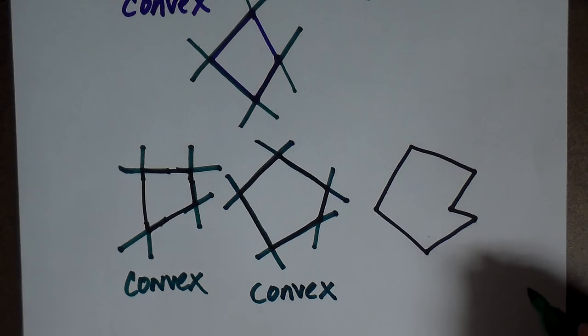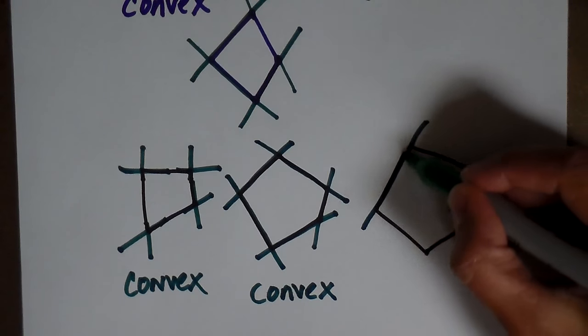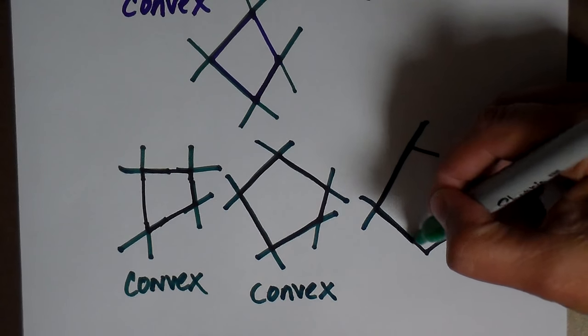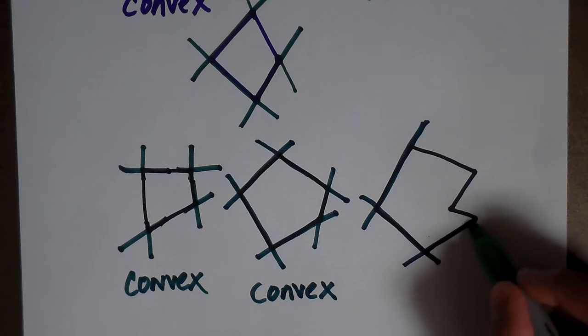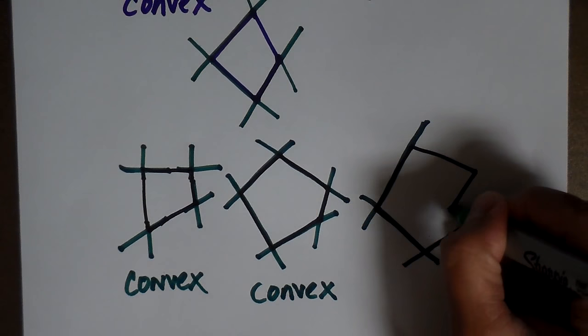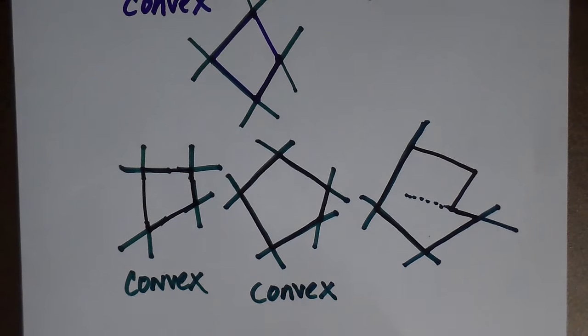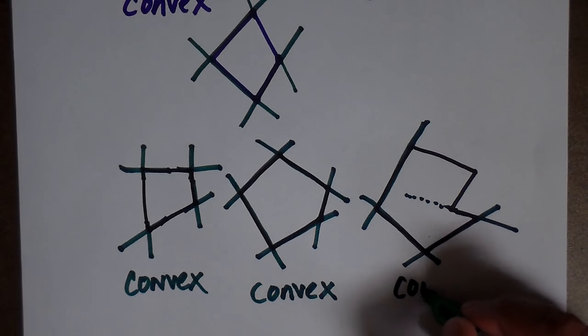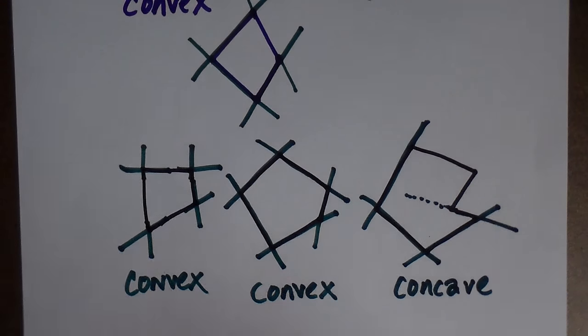So let's look at the last one. This side doesn't extend into the interior. Neither does this one. Neither does this one. But what happens when we get here? This one does, doesn't it? That goes into the inside. So that automatically makes this concave, okay?